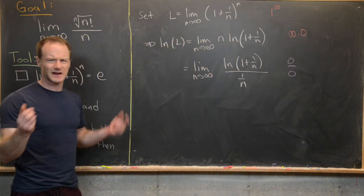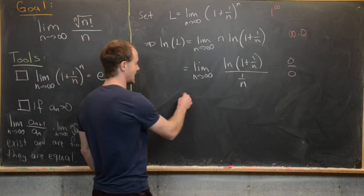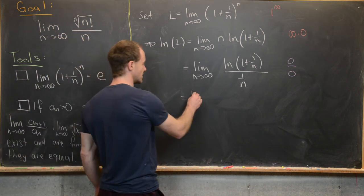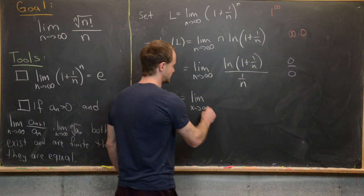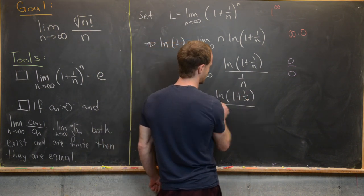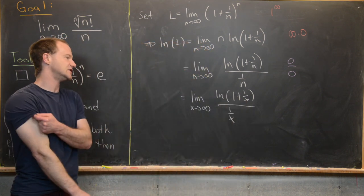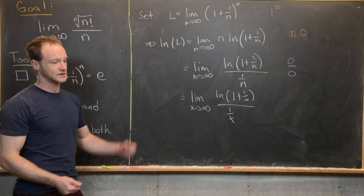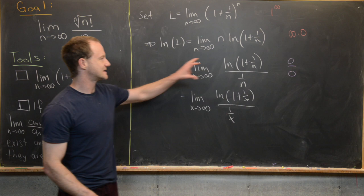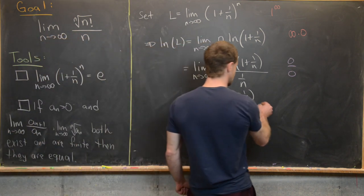Now I'm going to do something subtle but not strictly necessary: I'll pass from a discrete variable to a continuous variable. So we write this as the limit as x goes to infinity of the natural log of one plus one over x, all over one over x. That's still an indeterminate form, but now we have a continuous limit, which means we can apply L'Hôpital's rule by taking the derivative of the numerator and denominator — something we can't necessarily do until we have a continuous variable.